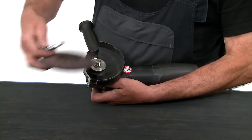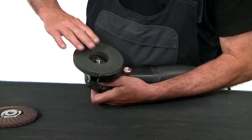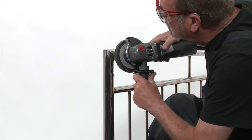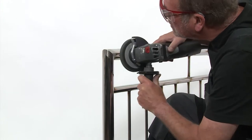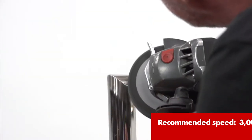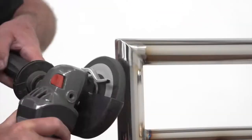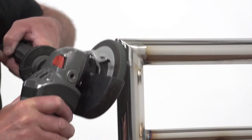A difference can already be seen. Then change from the OSF disc to the hard pressed fleece disc cloth plate. Then sand transversely to the direction of the previous sanding. Make sure that all sanding marks caused by the OSF disc are removed.